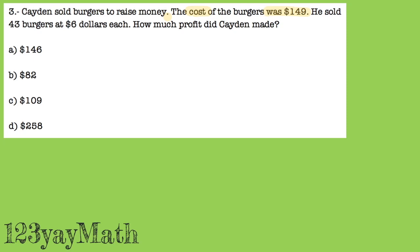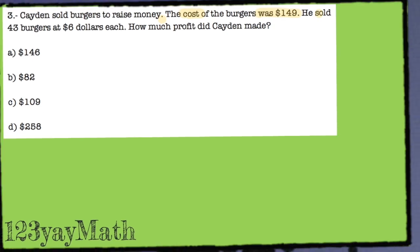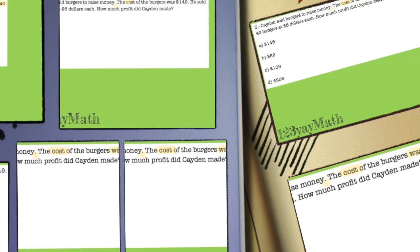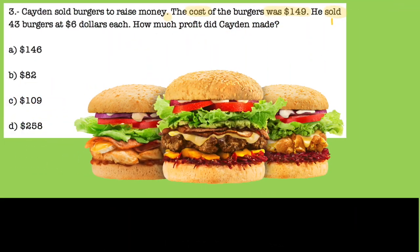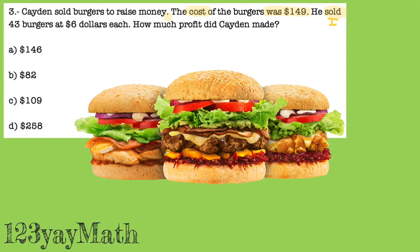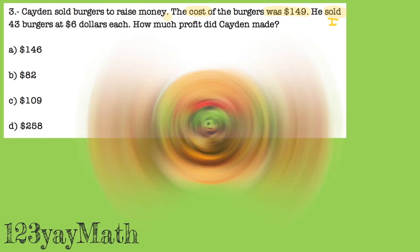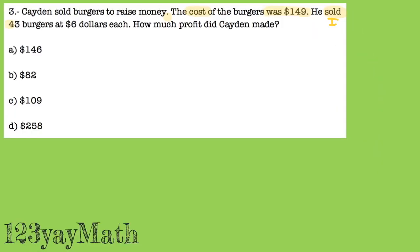And then he sold — when you sell something, that is your income. It's the money that you're getting. So he sold 43 burgers at $6 each. And we want to know the profit.